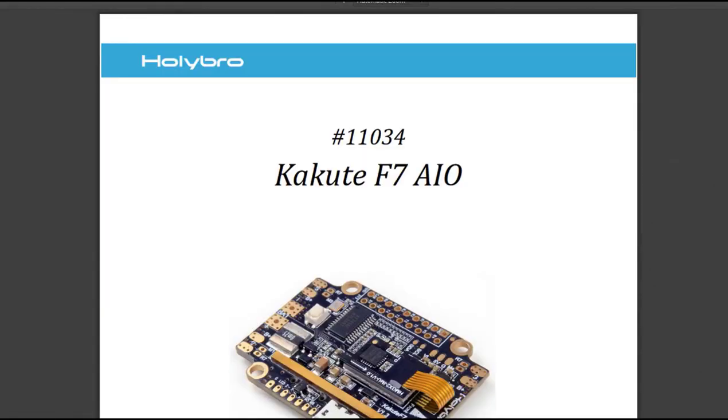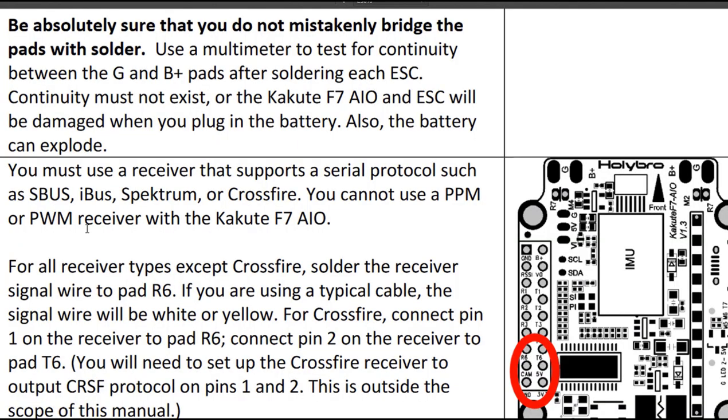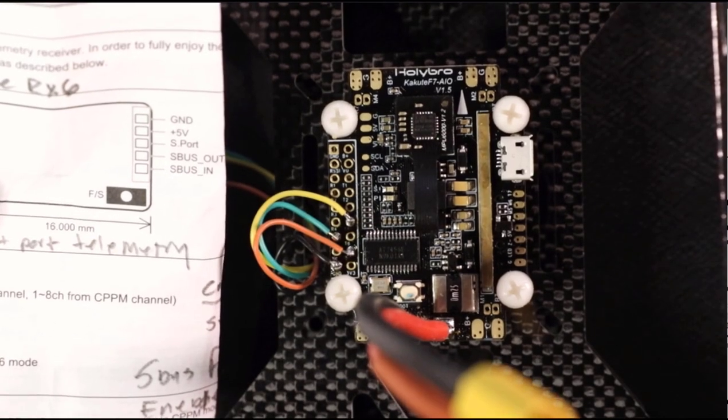So here's the directions online at the Hollybro website. I got to say that these directions were put together very very well and they couldn't make it any simpler. Let's take a look at the first thing that's relevant. You must use a receiver that supports a serial protocol such as S bus. All right, check, we got that one taken care of. All right, so for all receiver types, solder the receiver signal wire to the pad R6. We have identified the green wire, or our fourth wire, as our S bus because it says so right here, the fourth one down.